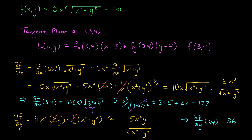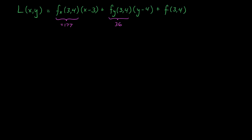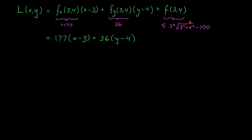Now let's put all the ingredients together and write down the equation of our tangent plane. L(X, Y), the tangent plane at (3, 4), is given by 177(X − 3) + 36(Y − 4) + F(3, 4). We compute F(3,4) by plugging in the point: 5 times 3² times √(3²+4²) minus 100. The square root term is 5, so this is 9 times 25, which is 225, minus 100, giving us 125. So we add 125, and there is our tangent plane.